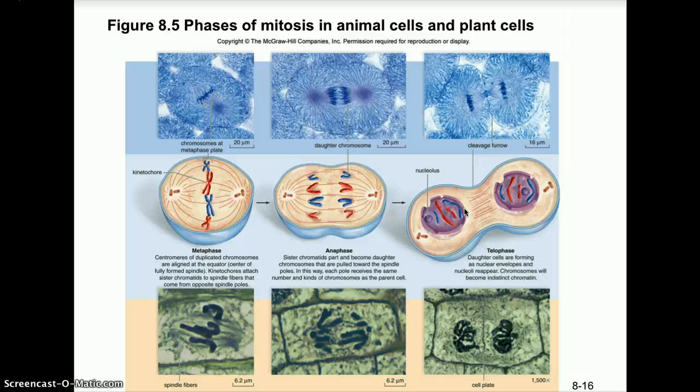A key point about metaphase is that the centromeres of all duplicated chromosomes are aligned at the equator — the center of the cell — with kinetochores attaching sister chromatids to spindle fibers coming from opposite poles. In anaphase, those sister chromatids pull apart and become daughter chromosomes that are pulled toward the spindle poles, so each pole receives the same number and kinds of chromosomes as the parent cell.